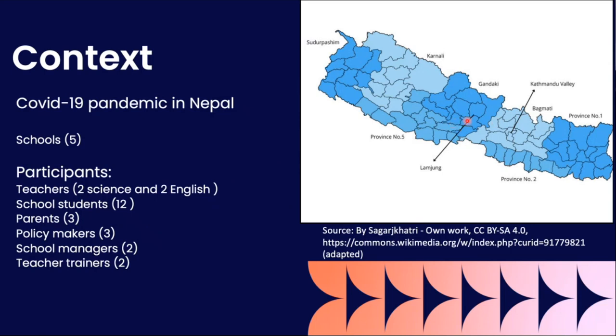So this is the semi-urban area, Lomjung, whereas Kathmandu Valley — this is the capital city. So I conducted my research in these two different locations.